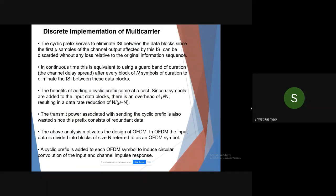The cyclic prefix serves to eliminate ISI between data blocks, since the first mu samples of the channel output affected by ISI can be discarded without any loss relative to the original information sequence. This cyclic prefix is a sort of guard band which we are using in FDM. Now in OFDM, we are using a cyclic prefix.